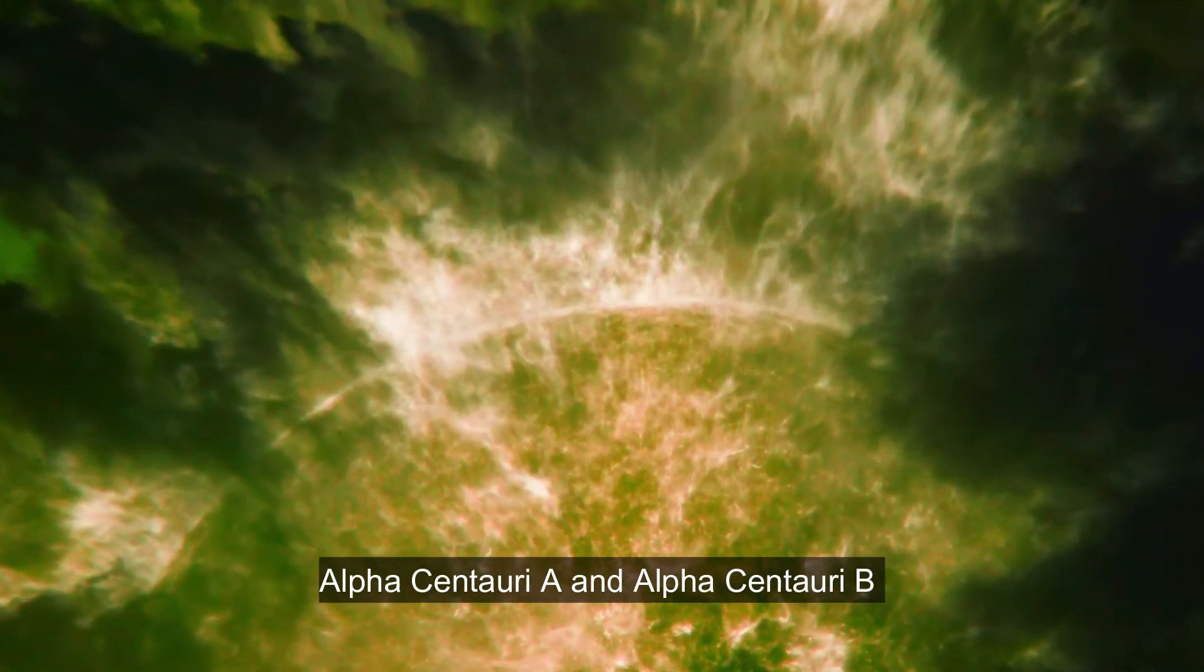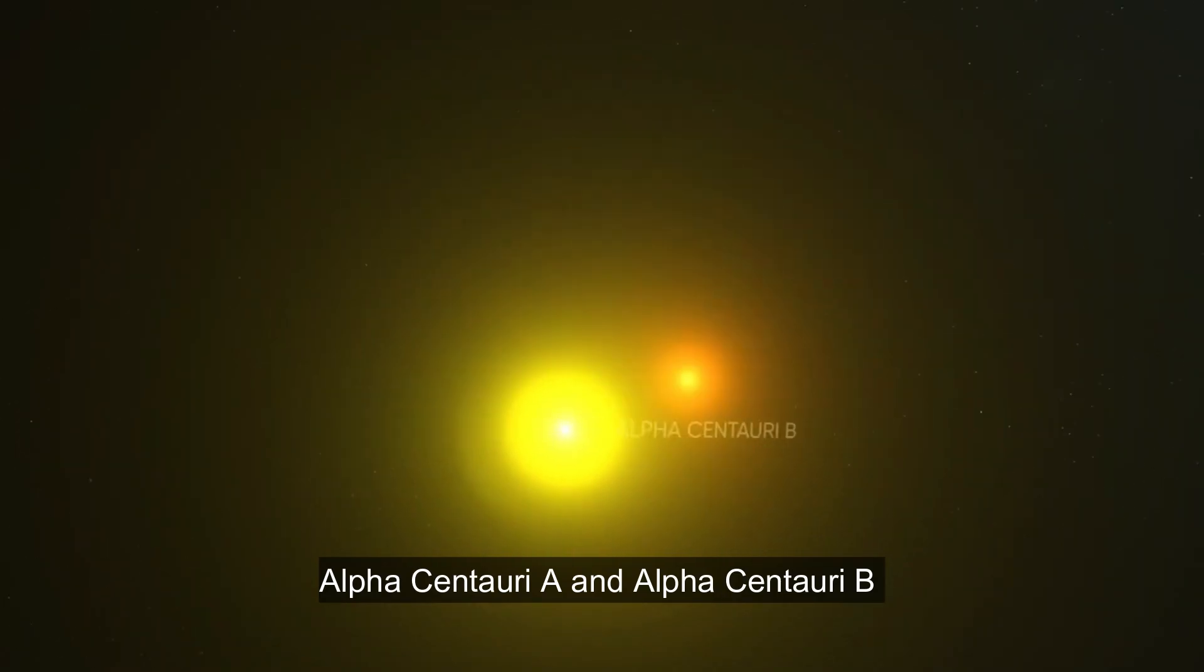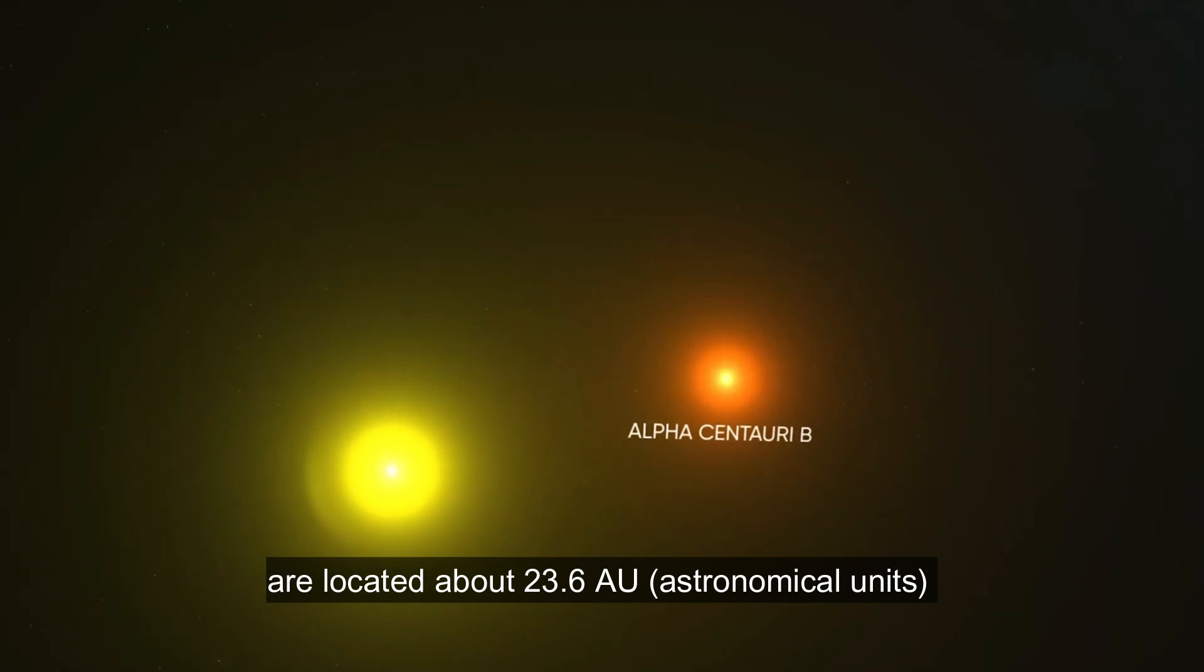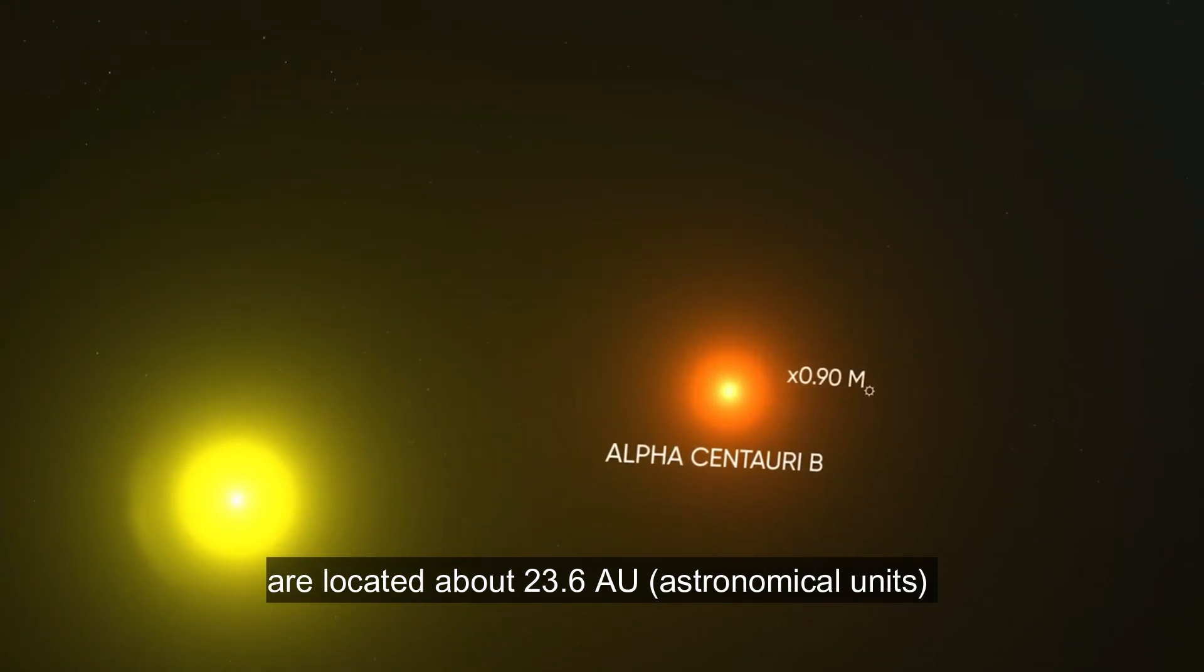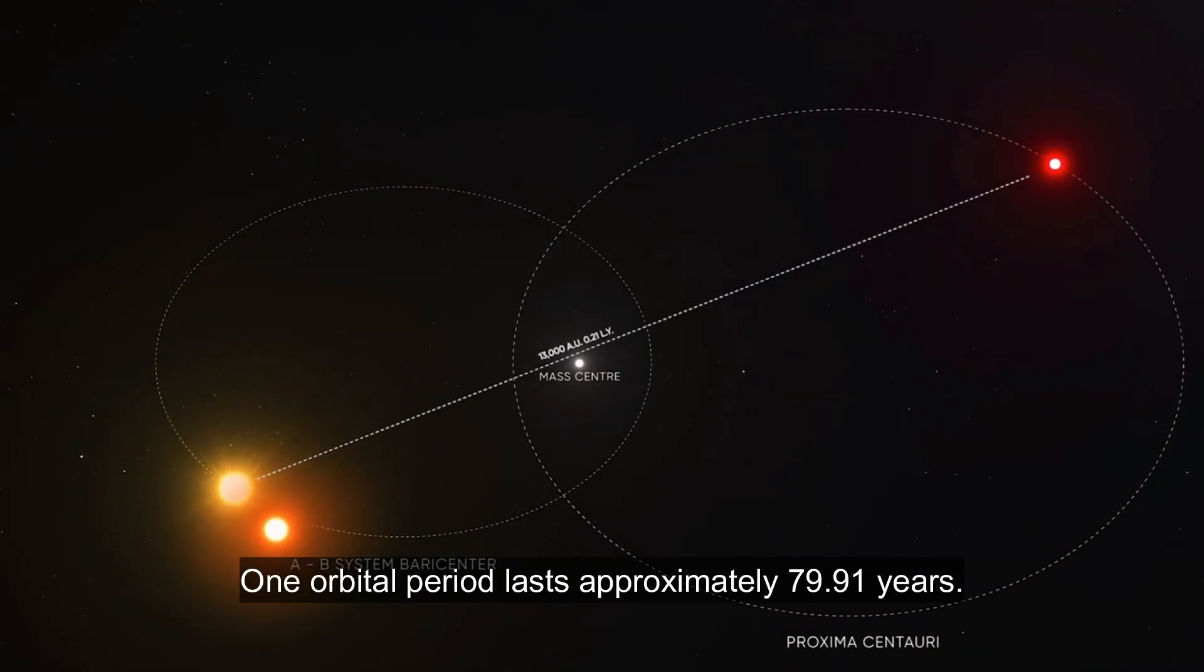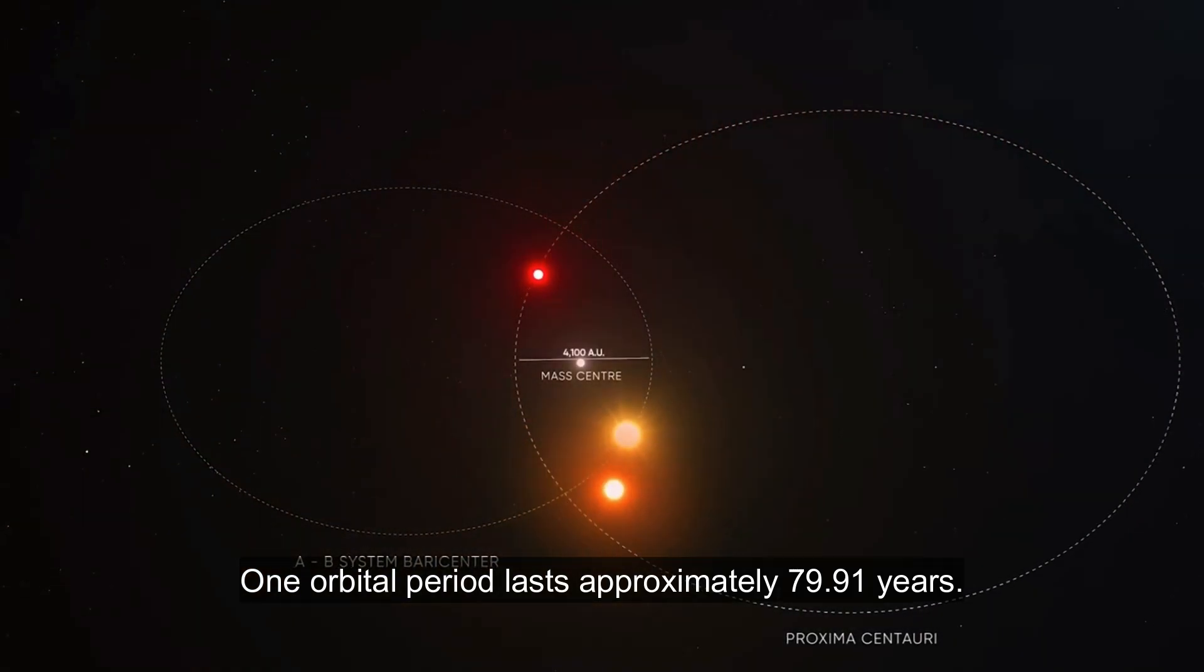Alpha Centauri A and Alpha Centauri B are located about 23.6 astronomical units from the center of gravity of the system. One orbital period lasts approximately 79 to 91 years.